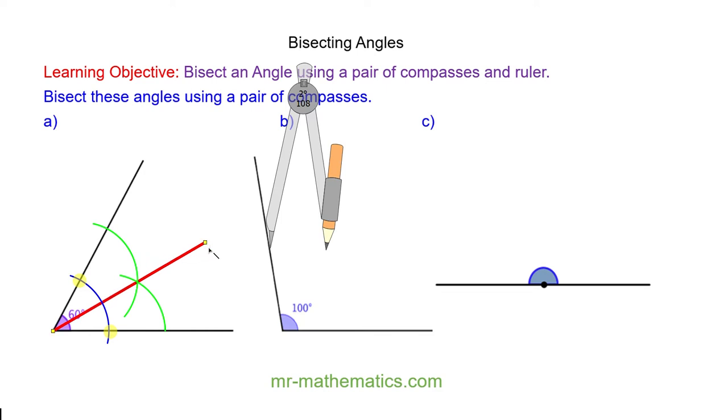So by bisecting the 60 degree angle I have created two 30 degree angles.